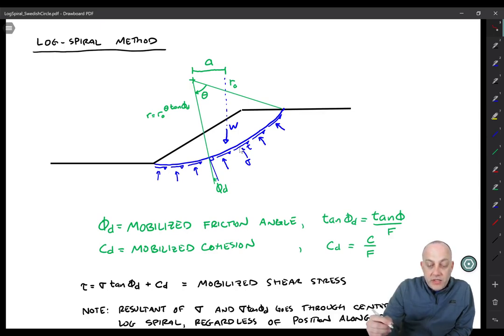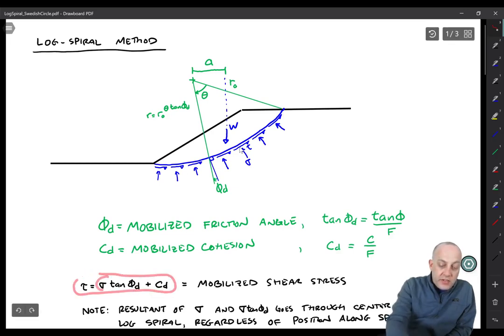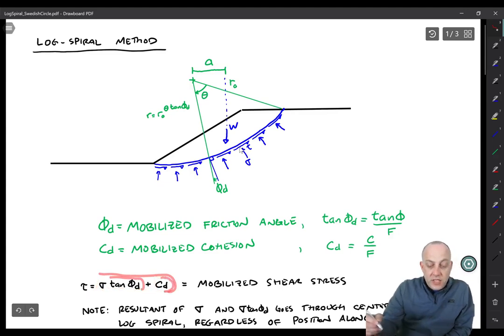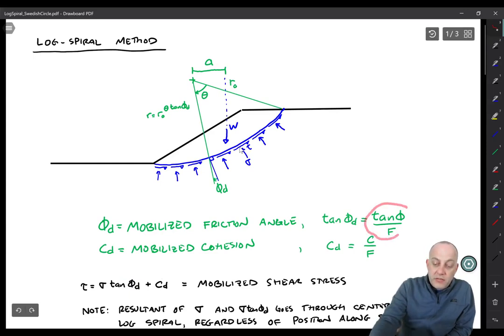One of the interesting aspects of the log spiral is that the shear stress is divided into two components. You have the sigma times tangent of phi d and then you have a c d term and these mobilized angles can be computed if you know the strength and the factor of safety.